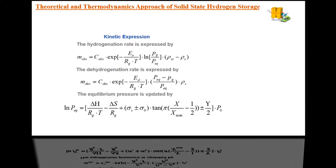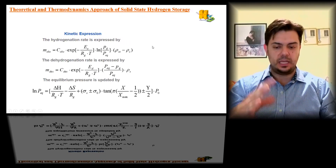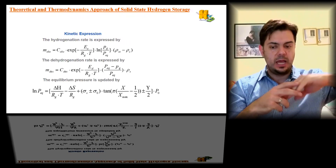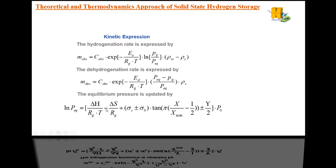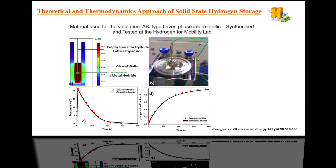The pressure difference between the supply pressure and equilibrium pressure is the driving force. As the reaction proceeds, this pressure drops and the reaction slows until it theoretically reaches zero. The dehydrogenation rate is expressed by a similar term, but instead of a logarithm, it uses the difference between equilibrium pressure and actual gas pressure over the equilibrium pressure.